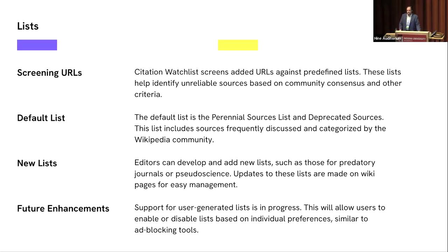The way it works is we have lists of URLs hosted on-wiki. You can edit them on-wiki — if you know how to edit a wiki page and create a bullet point list with section headers, you know how to update the lists and create new ones. We have lists of domain names and the script scans individual revisions against these lists. The default lists are perennial sources and deprecated sources. We also incorporated a list from a predecessor project called Sight Unseen, which focuses on the face of articles and provides general context about what sources are.